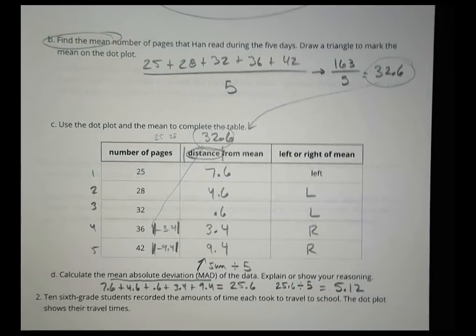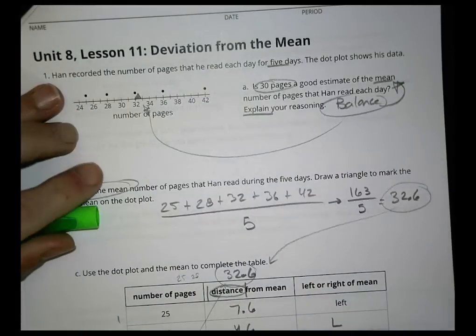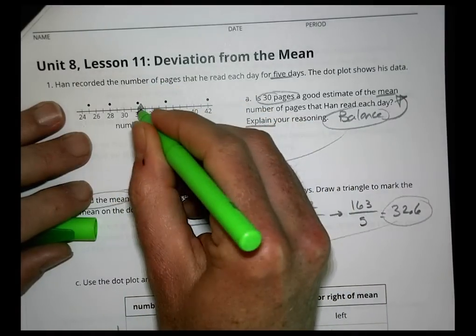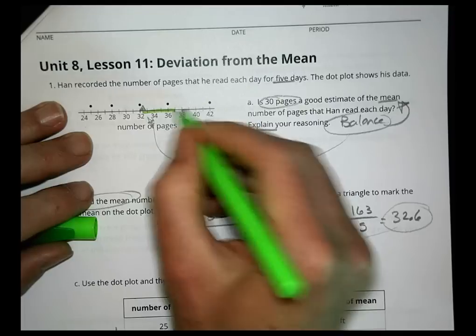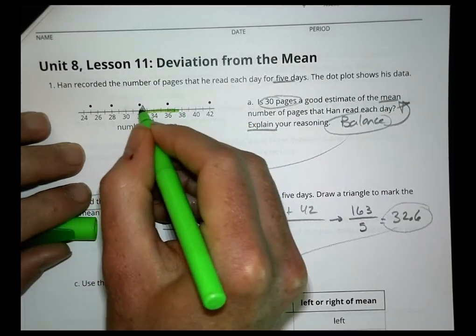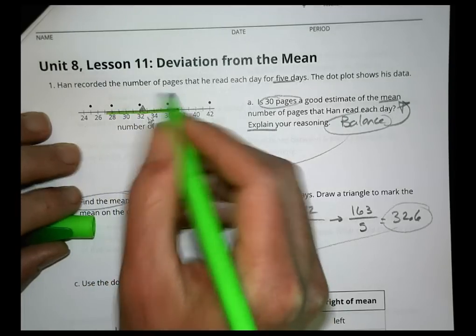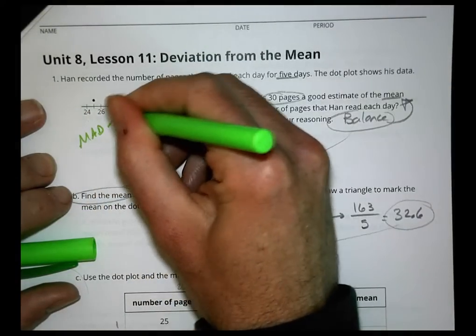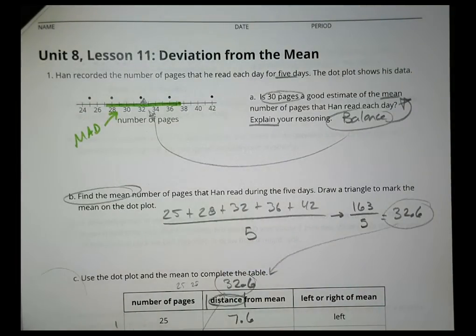The mean absolute deviation is 5.12 for this data set, meaning most data points are about 5.12 away from the mean of 32.6. So we go up to about 37.6 and down to about 27.5. That range is our mean absolute deviation — a measure of variance we can see visually as a green bar showing spread from the measure of center.